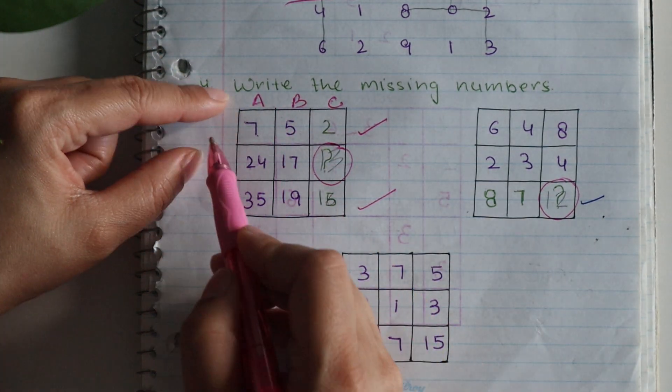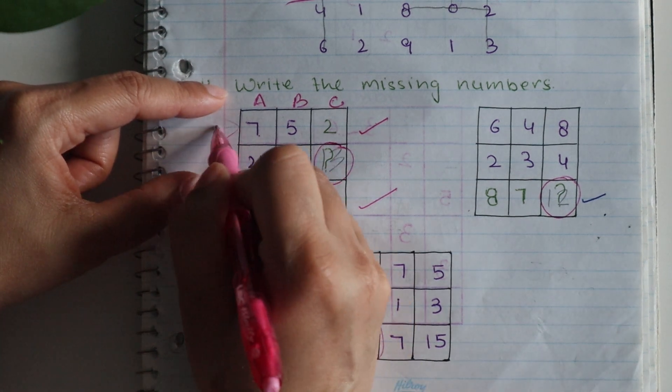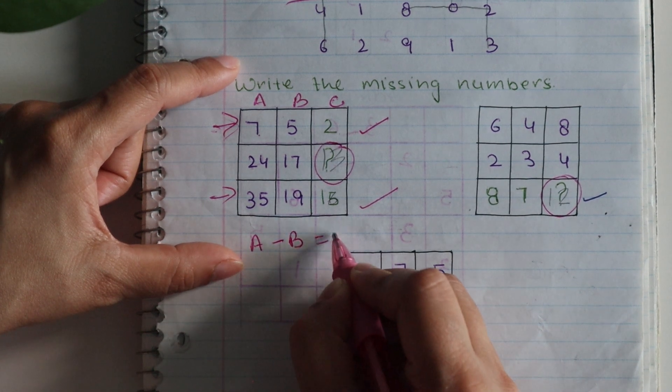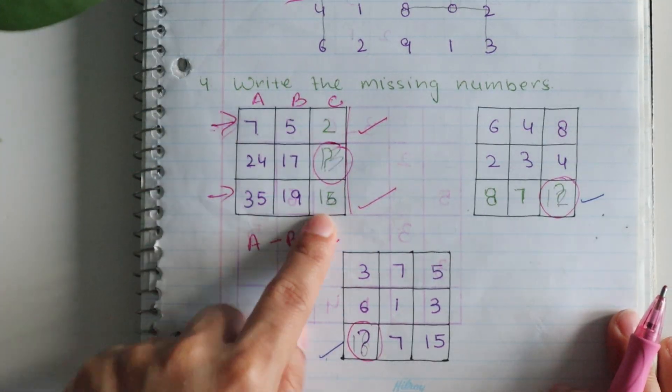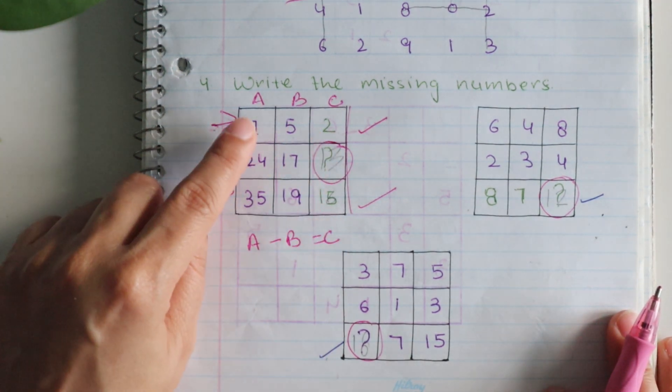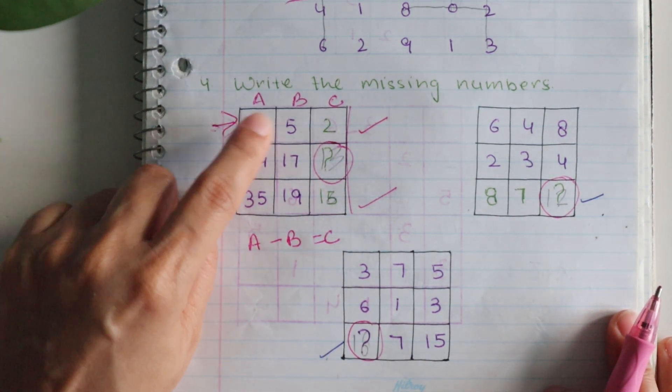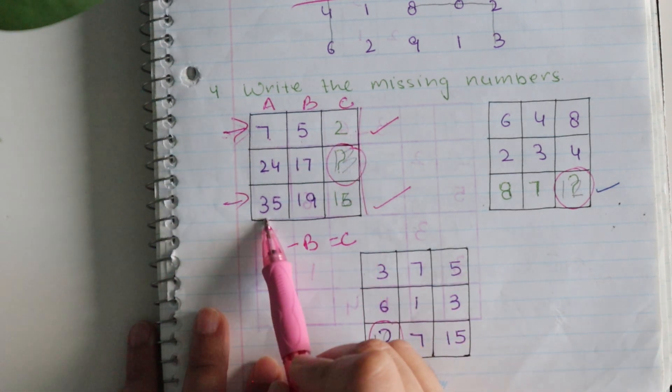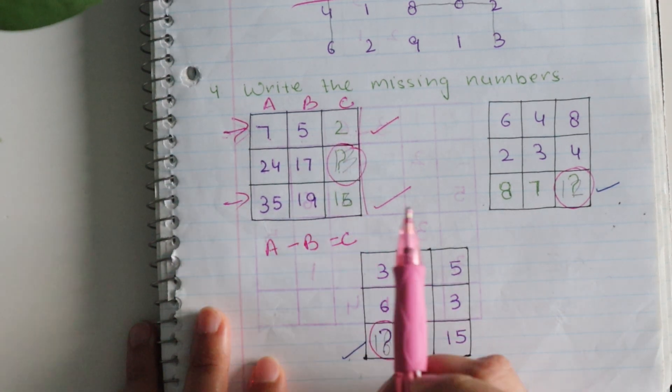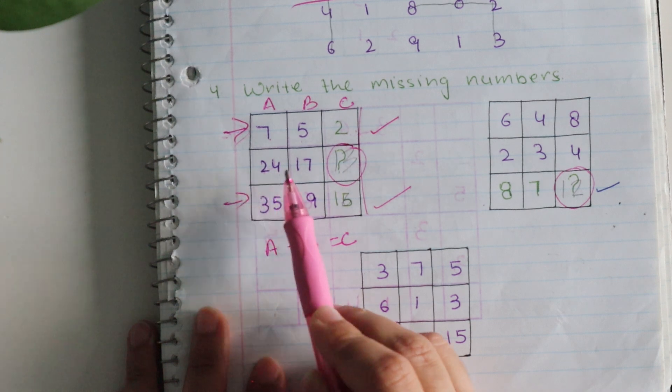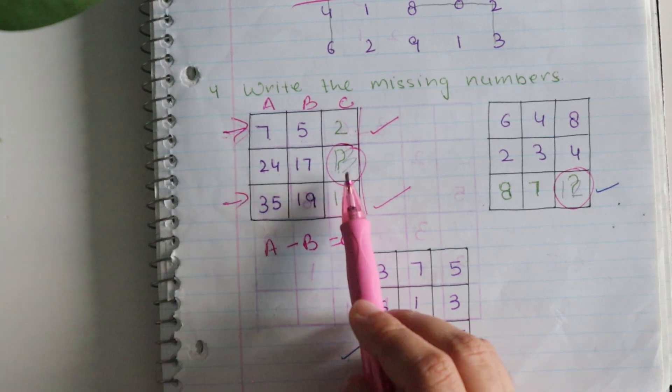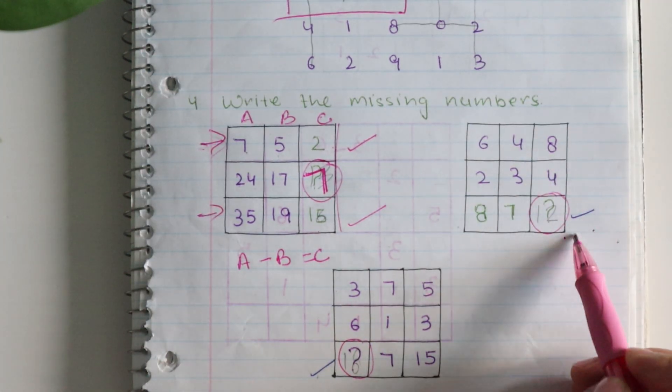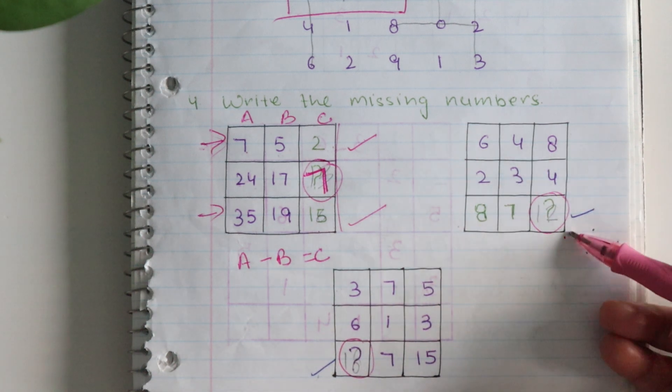So when we see these rows we will have the idea that the third column, let's say we have to give them names A, B, and C. So in this row, A minus B is C. Now which number is in C? Seven minus five is two, thirty-five minus nineteen is sixteen. Now what are we doing here? Twenty-four minus seventeen, so the answer is seven.